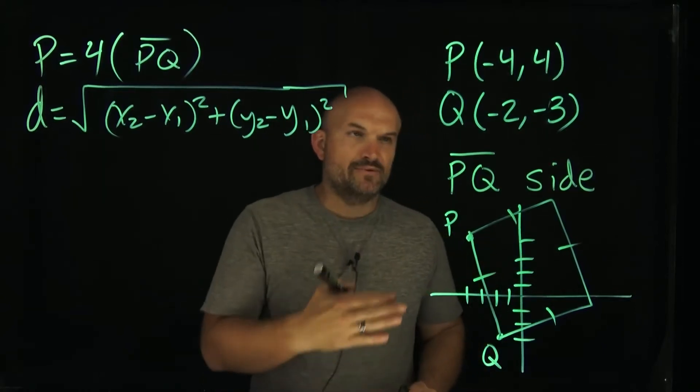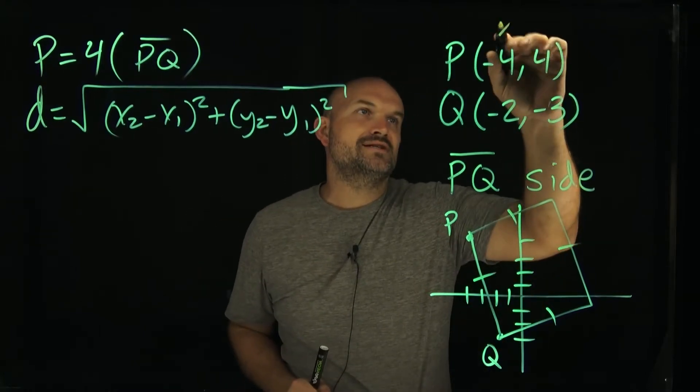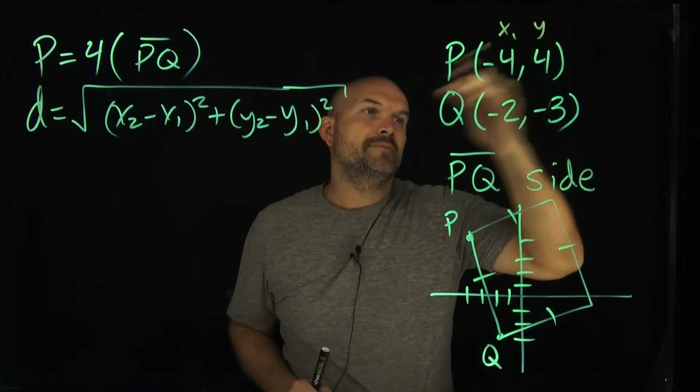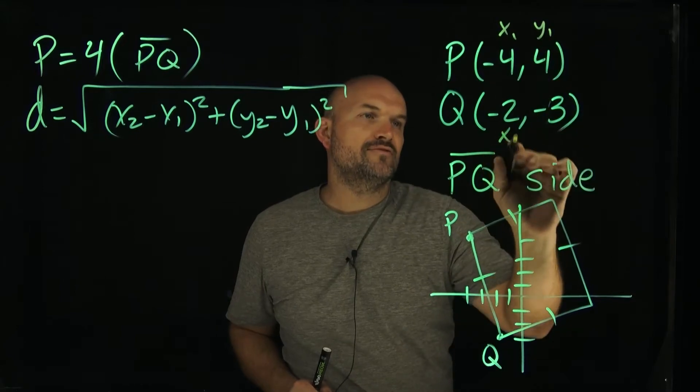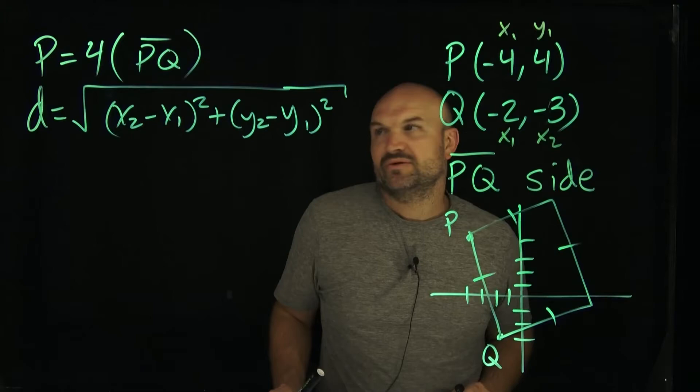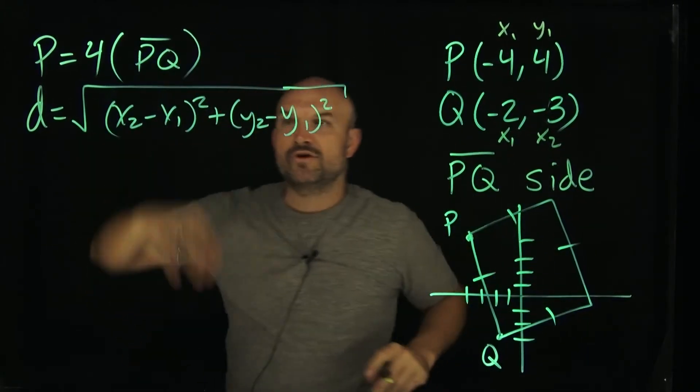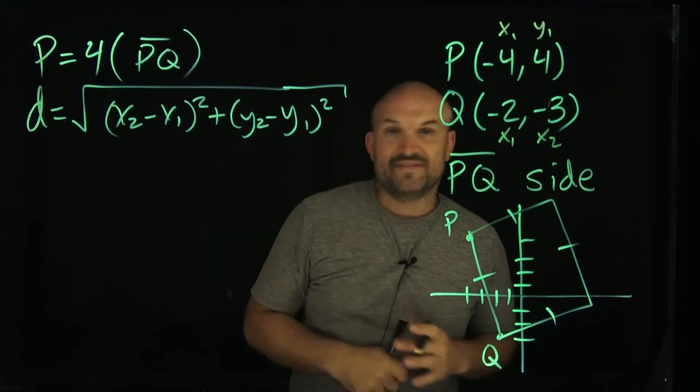Which one are we going to find? Which one's going to be X₁Y₁, which one's going to be X₂Y₂? It doesn't really matter. I always just like to go in order unless there is a reason for me to not go in order. But in this case, I think just going in order is going to be perfectly fine. So now what I'm going to do is take these values and plug them into distance formula to find the distance of our value PQ.